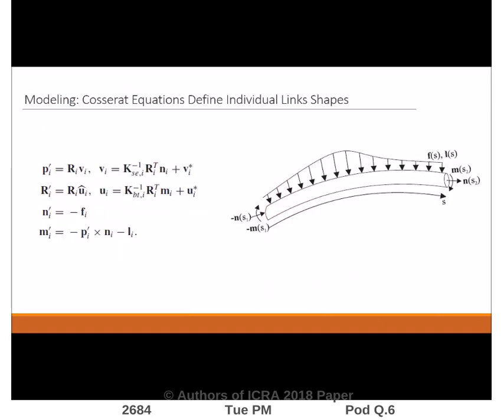In this paper, we provide a generalized Kosserat rod-based kinestatic model framework that accommodates various joint types and problem formulations used for simulation and control. The Kosserat rod static equilibrium equations describe the overall shape and internal forces of each flexible link.